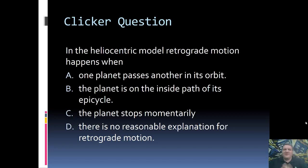All right, so how do we explain retrograde motion in the heliocentric model? It is A, that one planet passes another, which is far simpler than having circles on circles on circles.